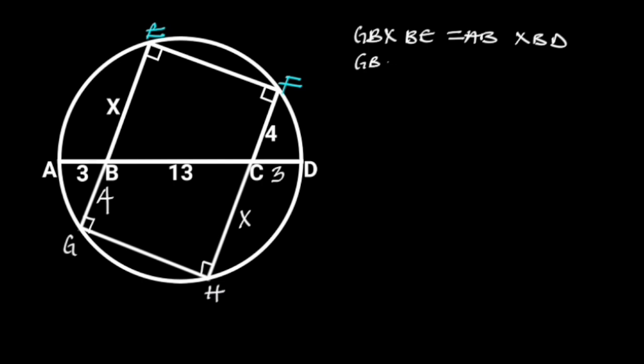GB is equal to 4, BE is equal to X, AB is equal to 3, and BD is equal to 13 plus 3, which is equal to 16.